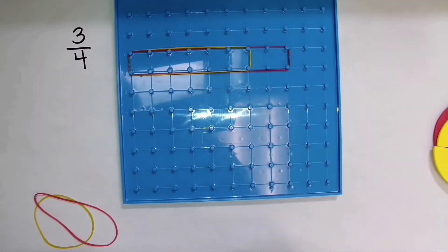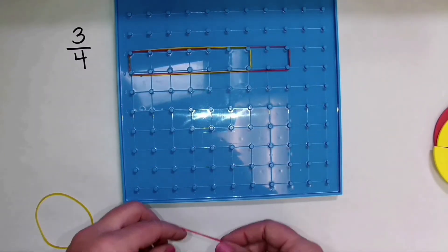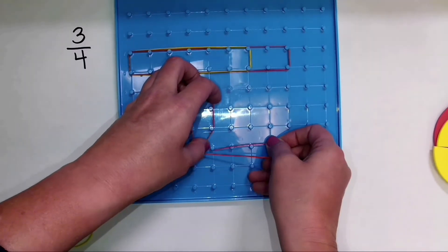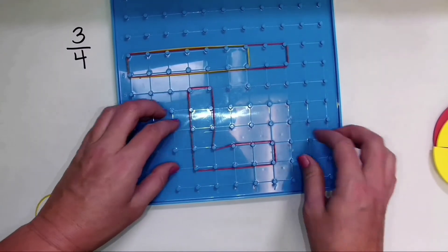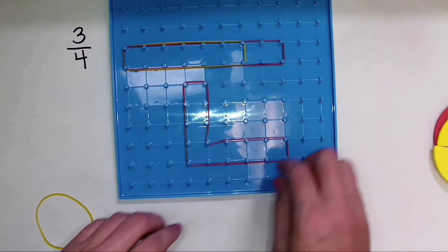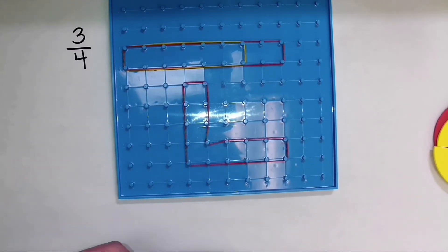But the nice thing about the geoboard is it doesn't always have to be rectangular in shape. Let's see, I could do something like this. I could say, here is an area, I'm going to try to get, I'll do like a letter L here, and I actually have to extend it just a little bit, that is divided into one, two, three, four equal parts.